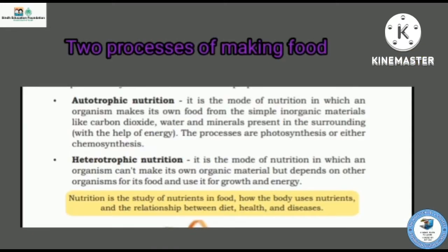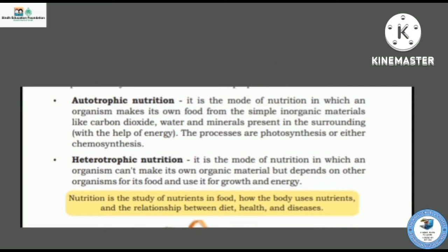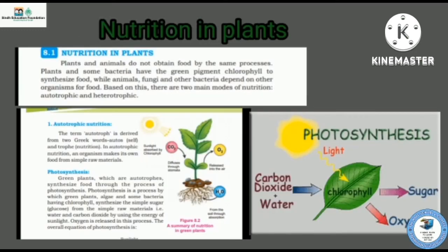There are two processes: one is autotrophic nutrition and the other is heterotrophic nutrition. Autotrophic nutrition occurs in plants, which make their own food by the help of photosynthesis. Photosynthesis is a process in which light, carbon dioxide, and water are used to produce glucose.